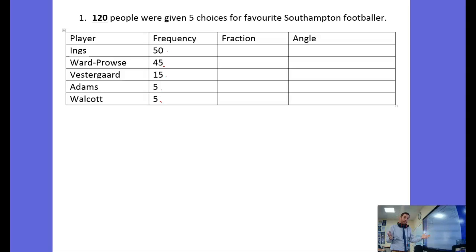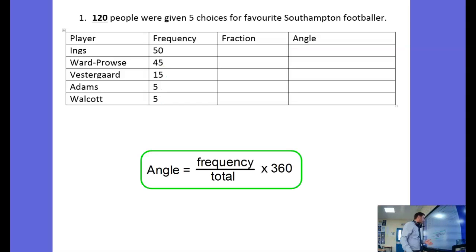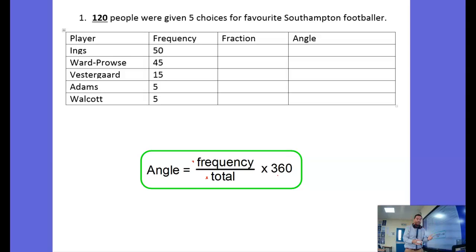I want to draw that in a pie chart, and to do that I need to calculate the angles. The angle equals the frequency divided by the total frequency, times by 360. So basically we find the fraction and then multiply it by 360 to get that fraction of a whole circle — a pie chart, a circle.